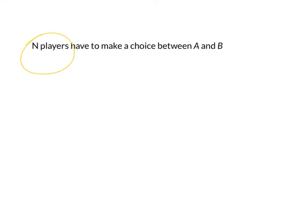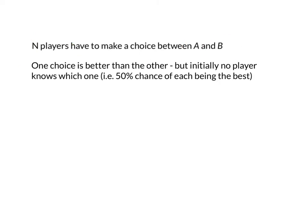Here's our simple model. We're going to have N players who are going to make a choice, and there are two alternatives: choice A or choice B. One of these choices is preferred — one is better than the other — but initially nobody knows which one's better, otherwise it would be a pretty simple game. So there's a 50% chance of each of these options being the best: 50% chance of A being the best, 50% chance of B being the best.